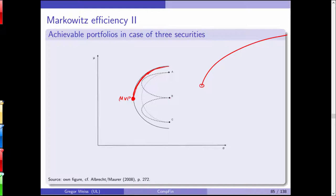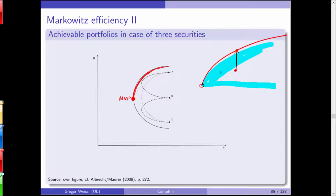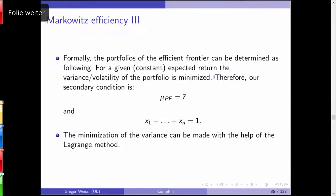This is what we call the efficient frontier — in German, the effiziente Grenze. Any portfolio not on the efficient frontier is dominated by some portfolio on it. The efficient frontier is also called the eggshell of Markowitz.